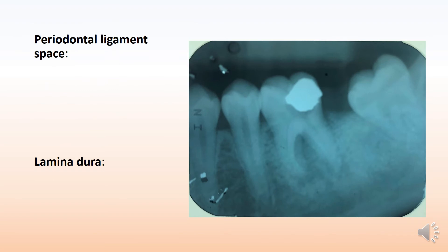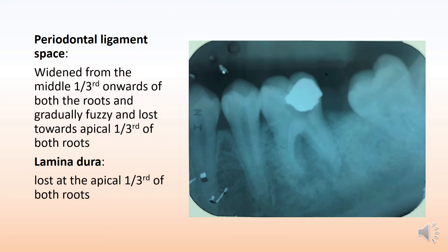Moving on to the periodontal ligament space and lamina dura — this is very important to observe in any tooth with pulp involvement. In this case, there is widening from the middle one-third onwards of both roots, which becomes gradually fuzzy and lost towards the apex. You can see the PDL space clearly from the cervical to the middle one-third, but at the apex it is no longer visible. Similarly, the lamina dura also appears to be lost at the apex of both roots.